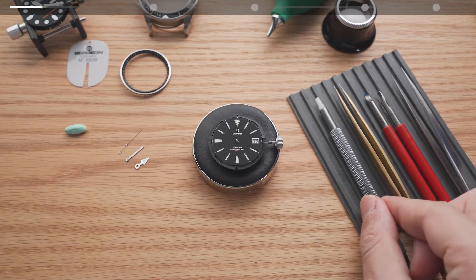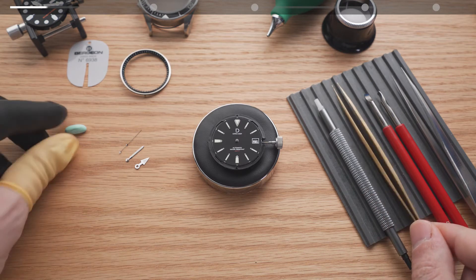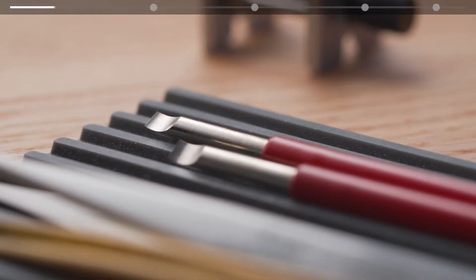For hand installation you'll need a hand installation tool and a pair of tweezers or rodico to pick up the watch hands. A loupe and a set of hand removal tools are also recommended as you'll likely need them as well.